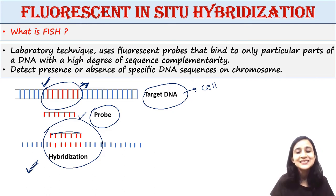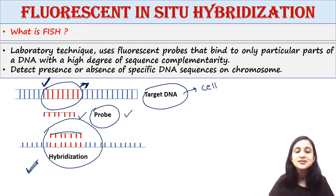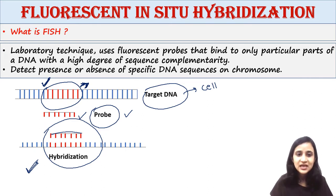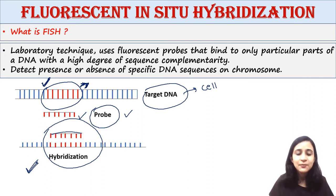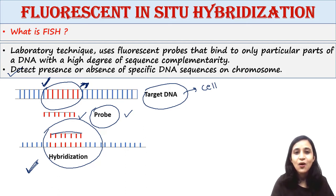You will see fluorescence if your target part is present in the cell. If it is absent, the probe will not bind, so you will not see any fluorescence. FISH basically detects the presence or absence of specific DNA sequences on chromosomes.